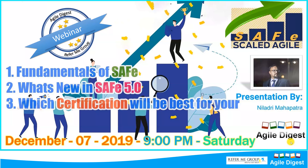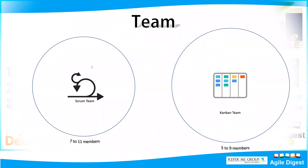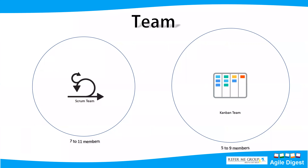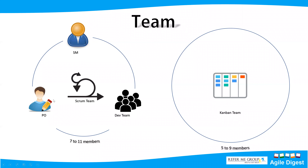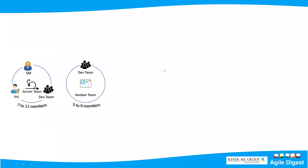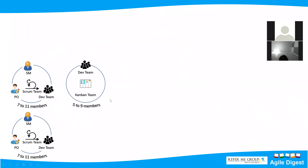Let's begin with the first steps: blending your existing practices within a team and how we can transition to scaled agile. At the team level, you are already working on — or may have worked on — two frameworks of agile: Scrum or Kanban. Scrum typically takes 7 to 11 members. A Scrum team has a Product Owner, Scrum Master, and development team. A Kanban team has a development team, with Product Owner or Scrum Master being optional.